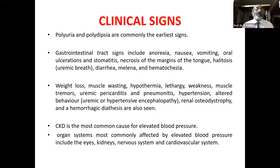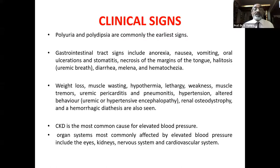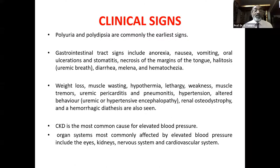Clinical signs: polyuria, polydipsia, anorexia, nausea, vomiting, stomatitis, halitosis, diarrhea, melena, hematochezia. Second group: weight loss, muscle wasting, hypothermia, lethargy, weakness, muscle tremors, uremic pericarditis, pneumonitis, hypertension, altered behavior, renal osteodystrophy, and hemorrhagic diathesis. If you find petechiae on the skin, suspect renal disorder. CKD is the most common cause of elevated blood pressure. Organ systems most commonly affected include eyes, kidneys, nervous system, and cardiovascular system.